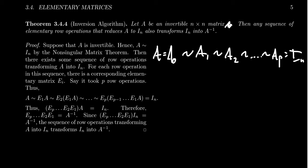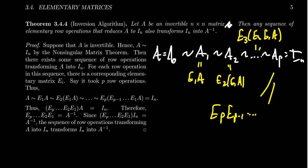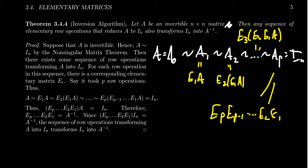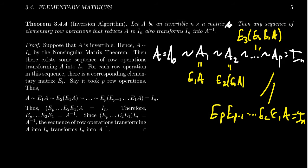Associated to each of these row operations is an elementary matrix. We're going to call it Ei. So A1 can be factored as E1 times A. A2 can be factored as E2 times E1 times A. And we continue down the line until we end up with EP times EP minus 1 all the way down to E2, E1 times A, and that equals the identity.